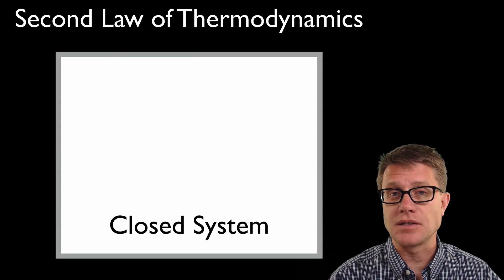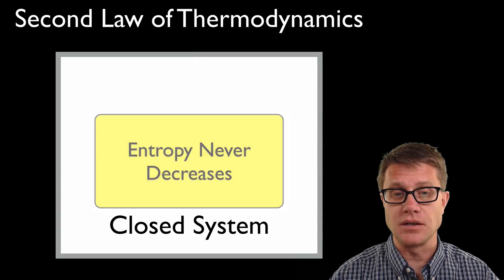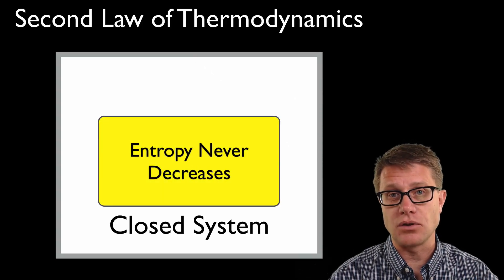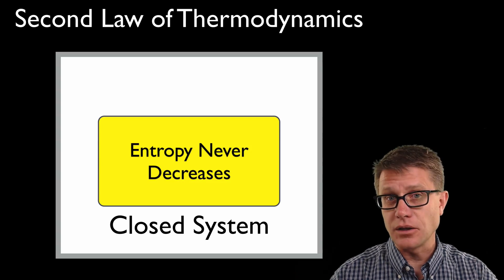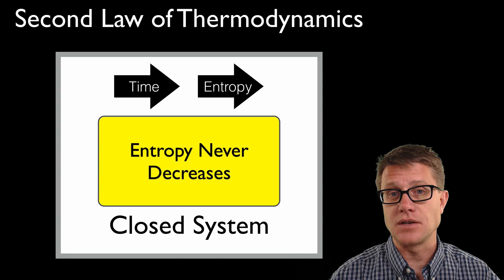The second law of thermodynamics says in a closed system—a system isolated from its surroundings—entropy will never decrease. Entropy is going to increase over time. In a closed system, as time advances, entropy is going to advance as well.